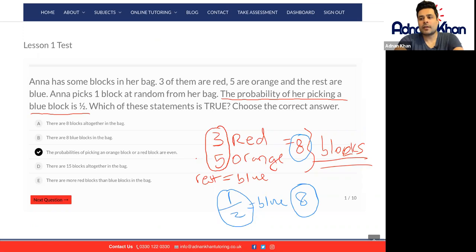So all together you have sixteen blocks altogether and the question says that half of the blocks in the bag are blue. So that means if we have sixteen blocks altogether, half of the blocks will be eight and eight will be blue.